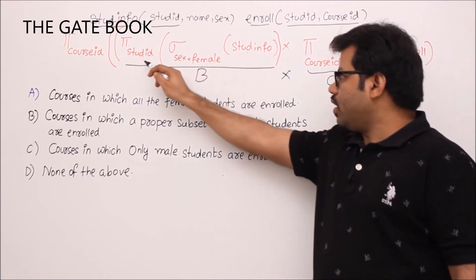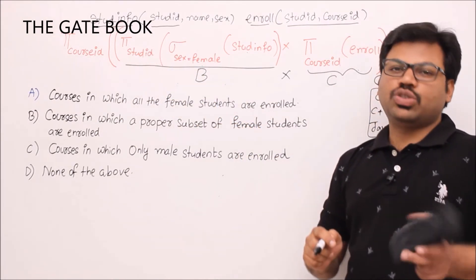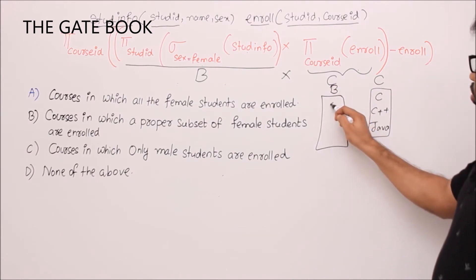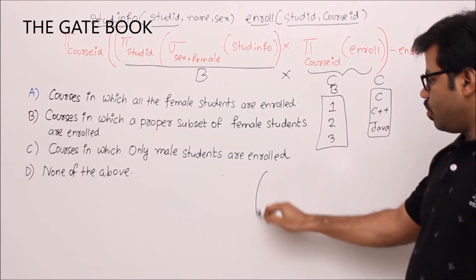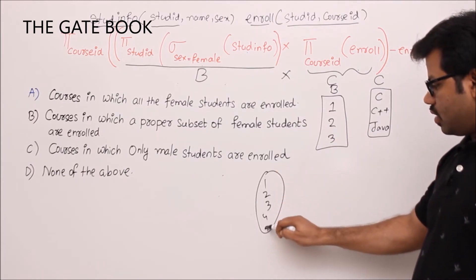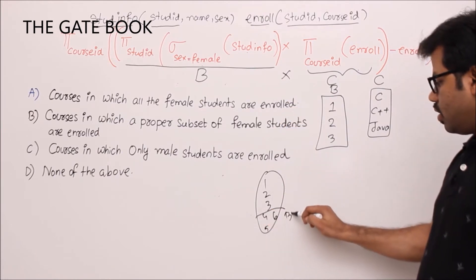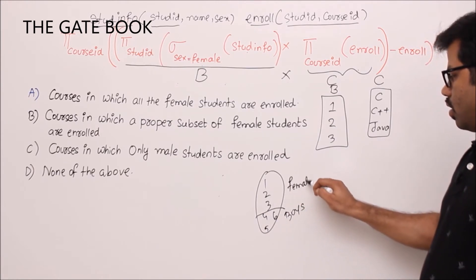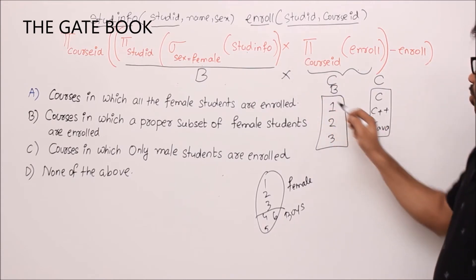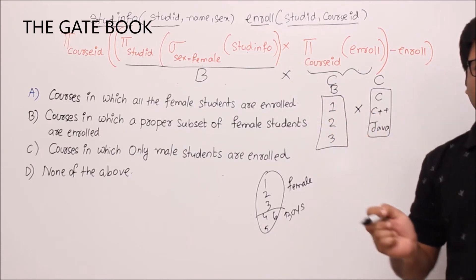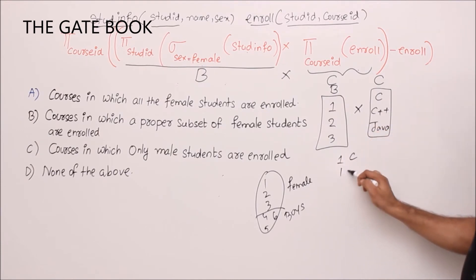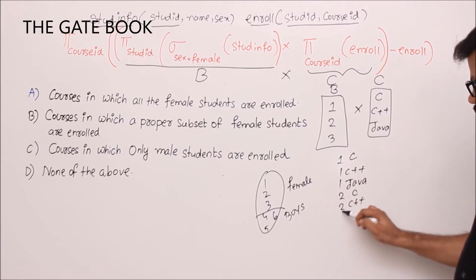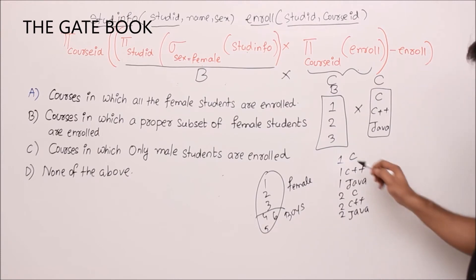Another part, call it B, fetches female students from student_info and projects only their IDs — so B is the set of female student IDs. Assuming female IDs are 1, 2, 3 and male IDs are 4, 5, 6. The query then computes B cross C — the Cartesian product of female student IDs with all course IDs, giving combinations like 1-C, 1-C++, 1-Java, 2-C, 2-C++, 2-Java, and so on.